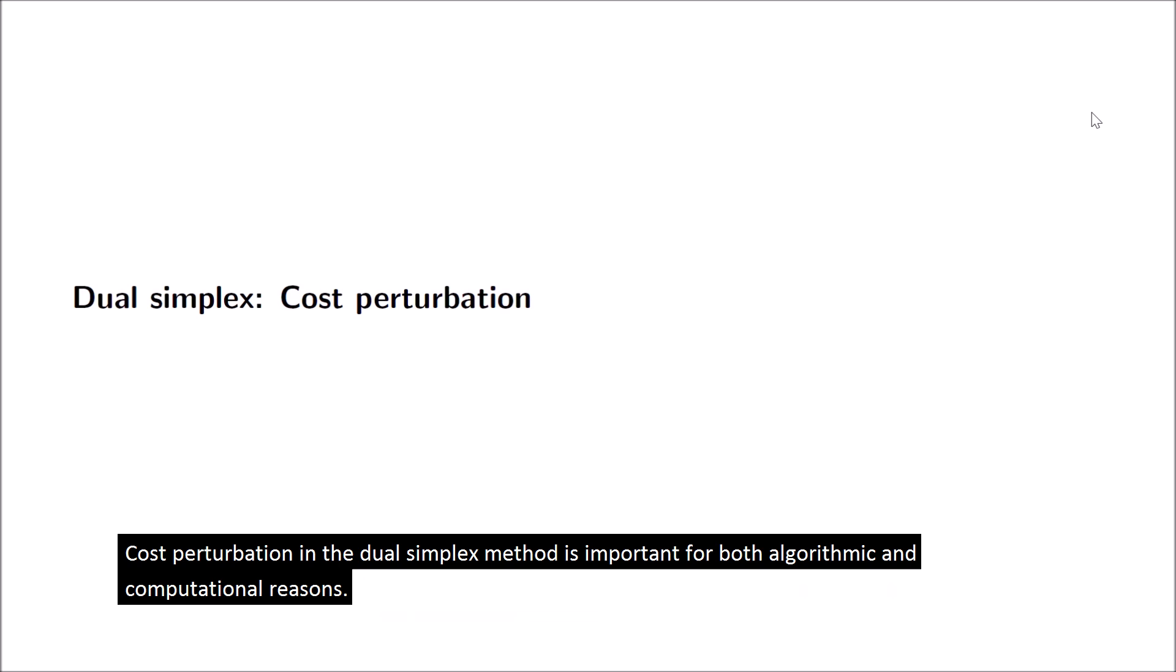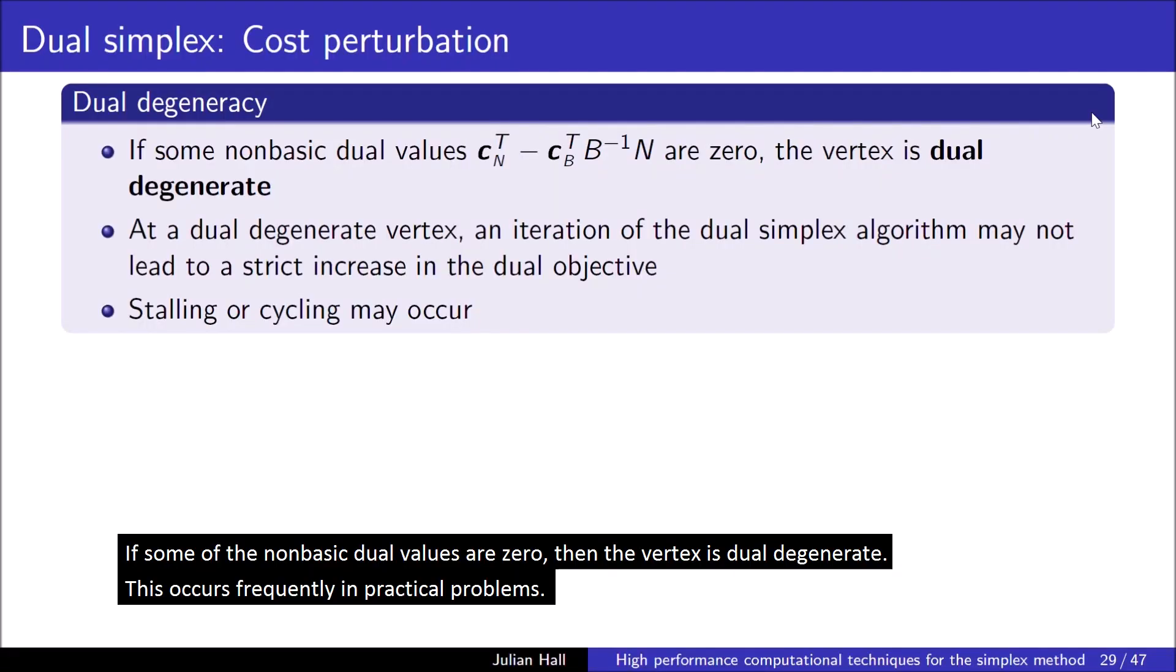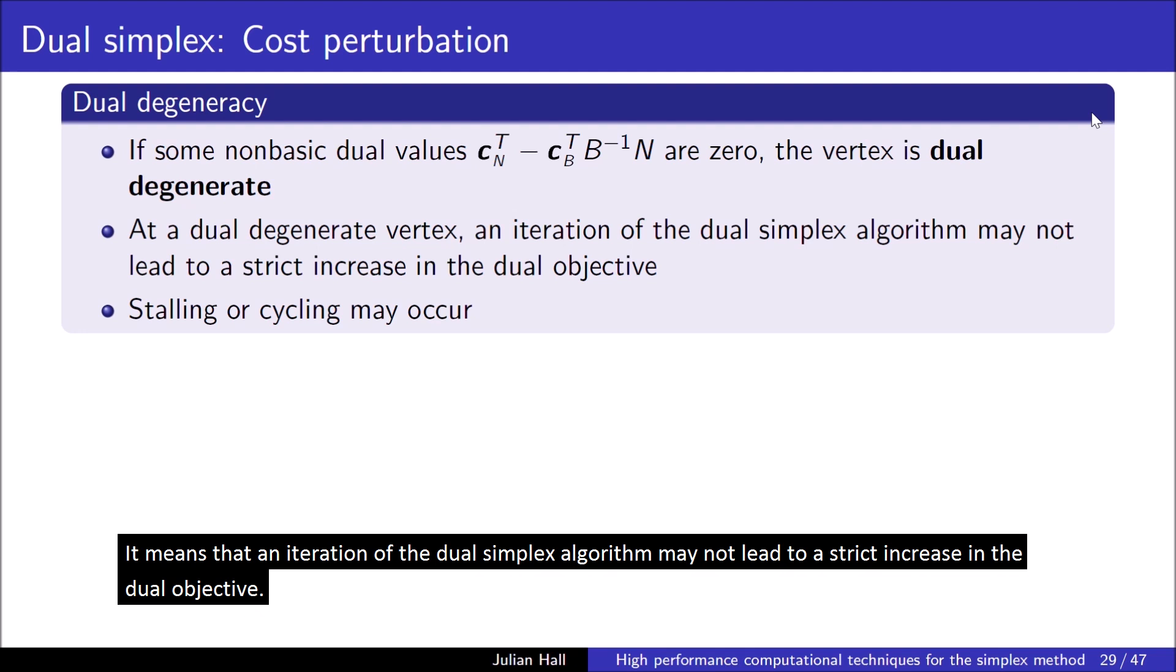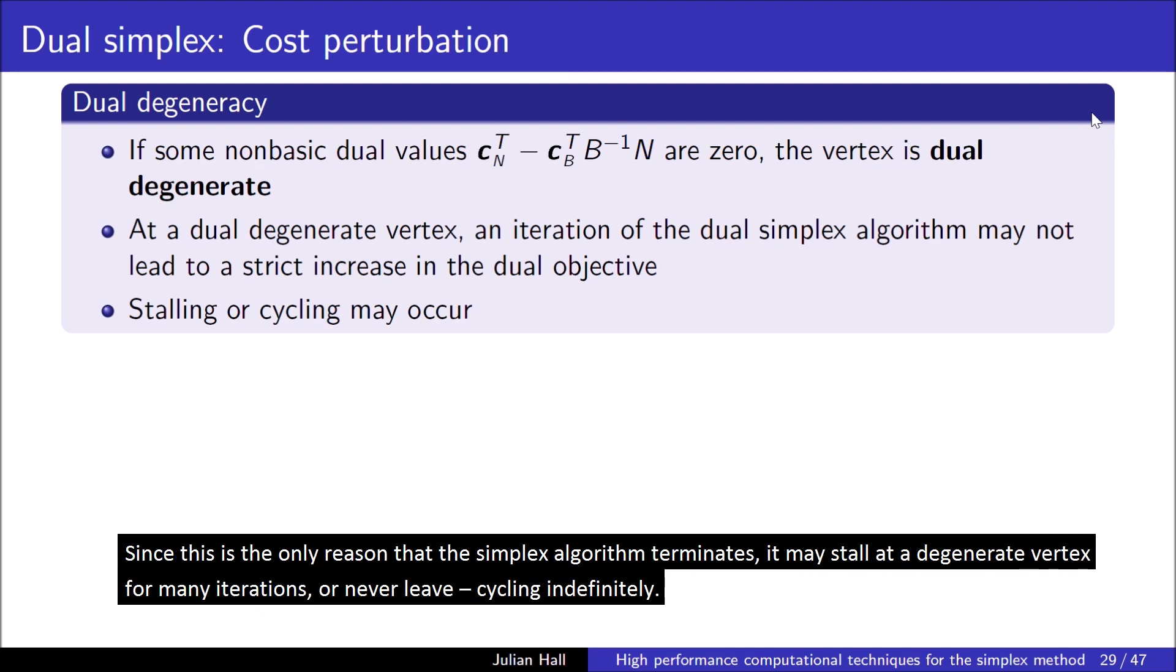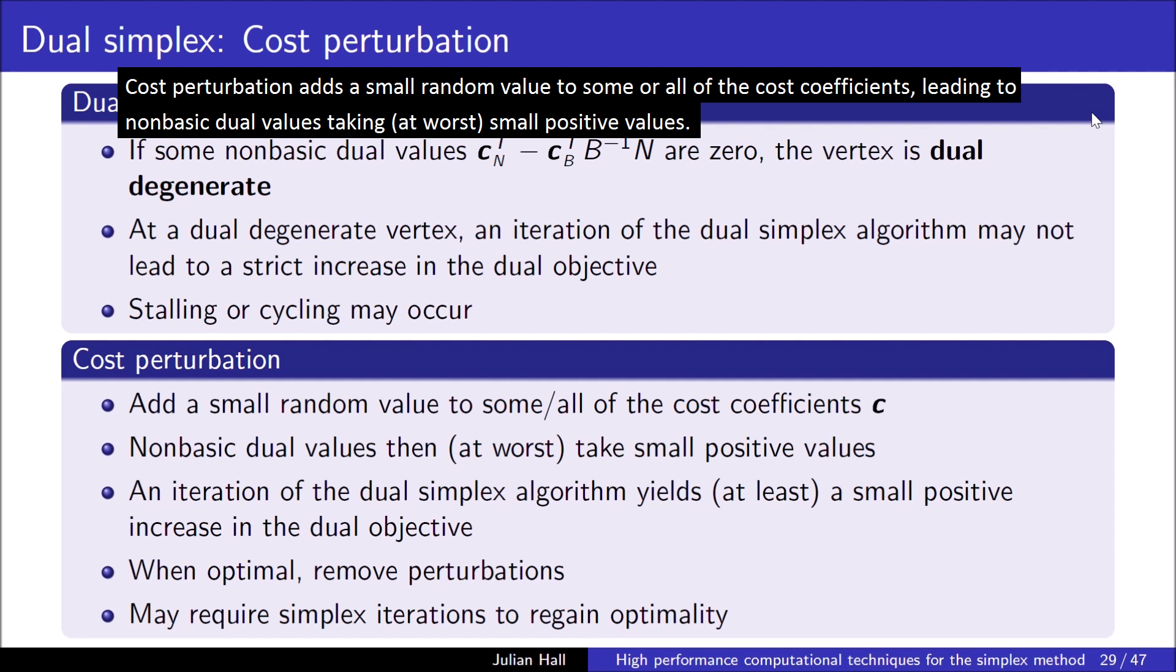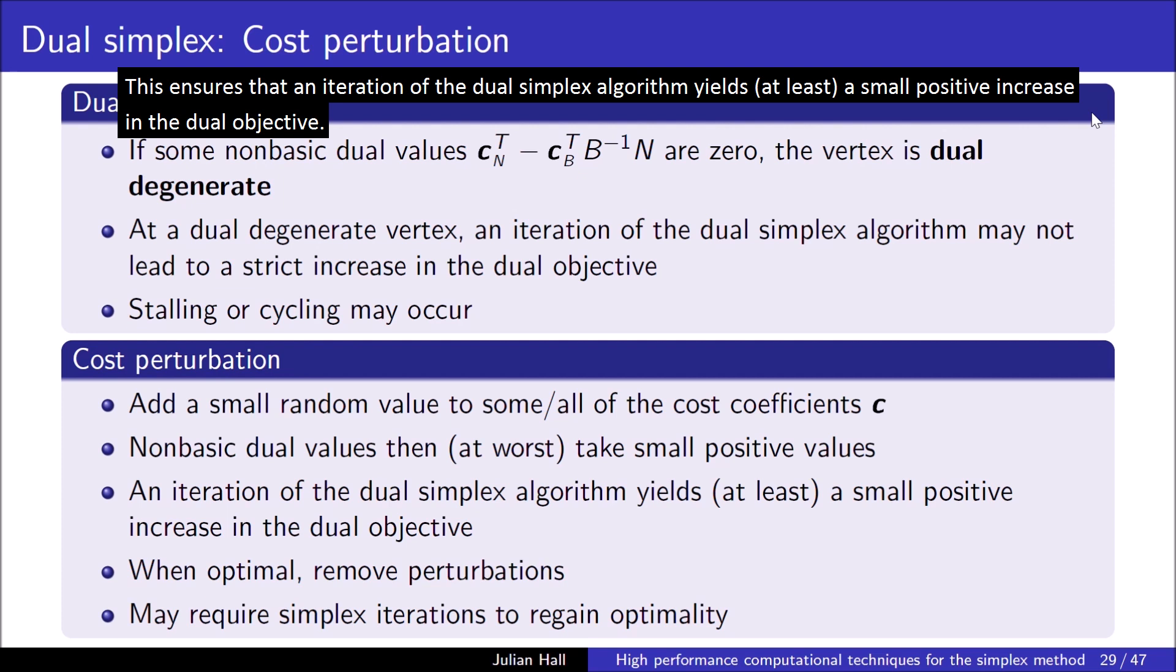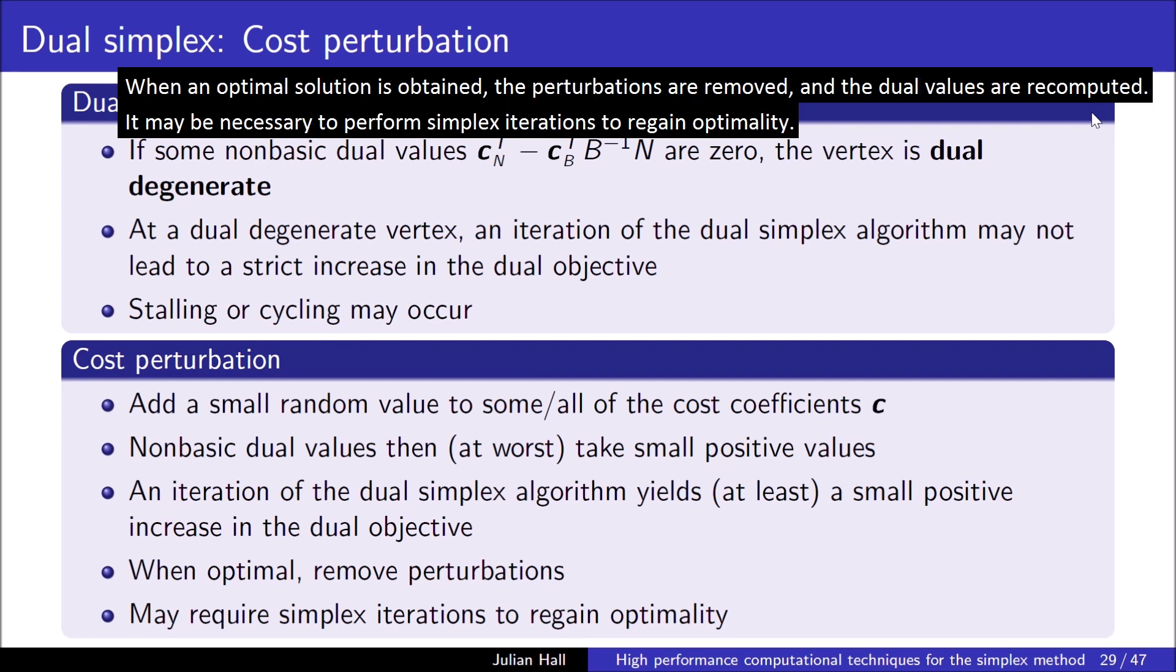Cost perturbation in the dual simplex method is important for both algorithmic and computational reasons. If some of the non-basic dual values are zero, then the vertex is dual degenerate. This occurs frequently in practical problems. It means that an iteration of the dual simplex algorithm may not lead to a strict increase in the dual objective. Since this is the only reason that the simplex algorithm terminates, it may stall at a degenerate vertex for many iterations, or never leave, cycling indefinitely. Cost perturbation adds a small random value to some or all of the cost coefficients, leading to non-basic dual values taking, at worst, small positive values. This ensures that an iteration of the dual simplex algorithm yields at least a small positive increase in the dual objective. When an optimal solution is obtained, the perturbations are removed and the dual values are recomputed. It may be necessary to perform simplex iterations to regain optimality.